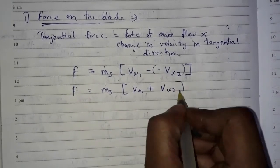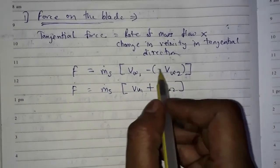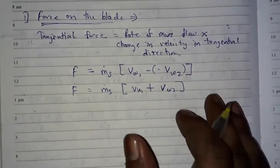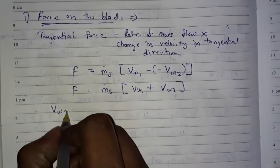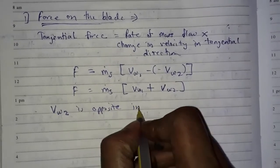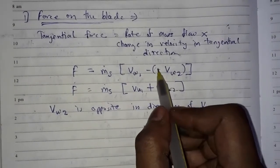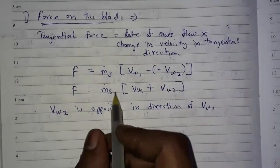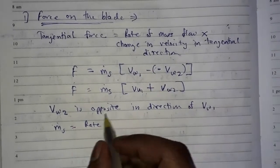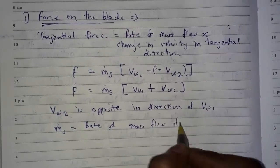Here F is equal to m-dot-s into (Vw1 plus Vw2). There is a minus sign because Vw2 is opposite in direction to Vw1. Here m-dot-s is the rate of mass flow of steam.